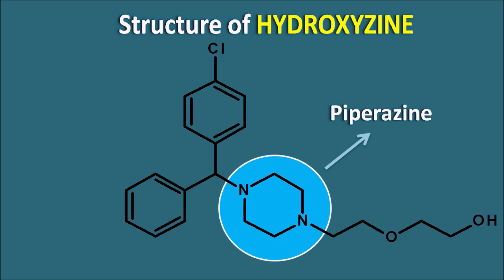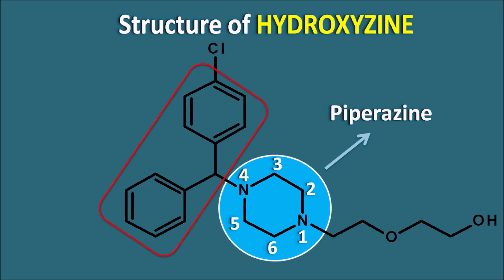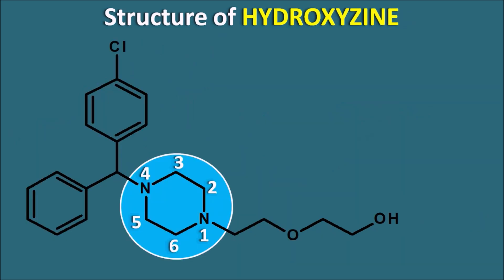That is why hydroxyzine chemically belongs to the piperazine category. Starting the numbering: positions one through six — at the fourth position it has a methyl group attached by two phenyl groups. These are collectively called diphenylmethanes, so hydroxyzine also belongs to the chemical category of diphenylmethanes.